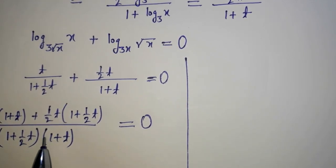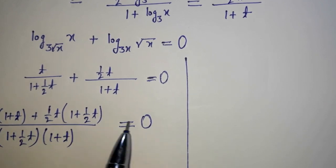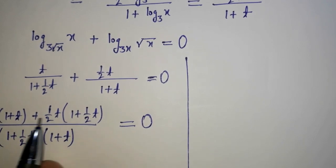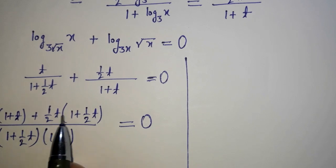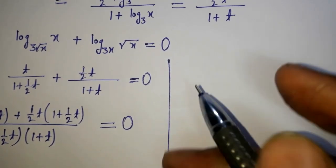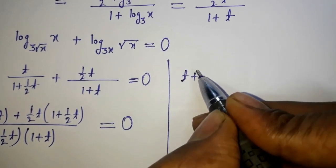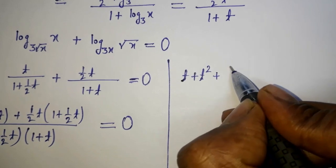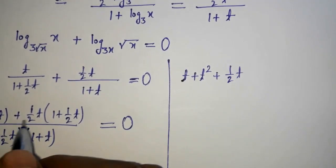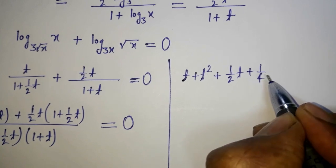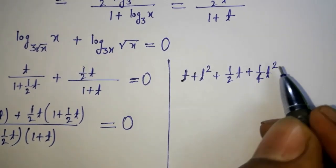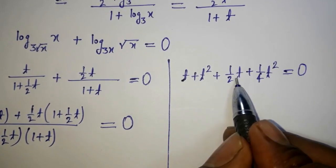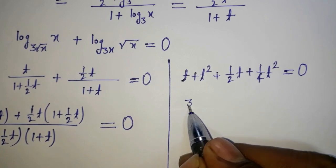The denominators should not equal zero. To get zero, the numerator quantities must be zero. Expanding: t + t² + t/2 + t²/4 equals 0, which simplifies to (3/2)t + (5/4)t² equals 0.